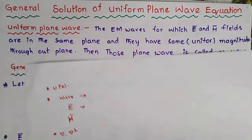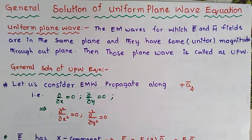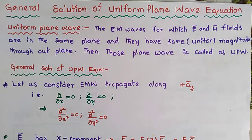The Uniform Plane Wave equation describes a wave where the electric field, magnetic field, and amplitude are the same magnitude throughout the plane. The electric field and magnetic field are perpendicular to each other, and the uniform plane wave is perpendicular to the direction of propagation.